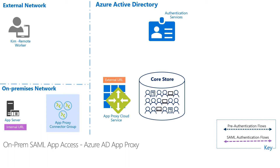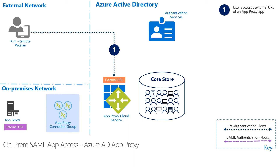Great, thanks Ramiro. So let's walk through the flow now using the diagram so it's easier to visualize how this all comes together. In step one, Kim goes to the same URL that she had bookmarked for Tableau Server even before App Proxy was involved. Under the covers, DNS is pointed to the App Proxy cloud service.